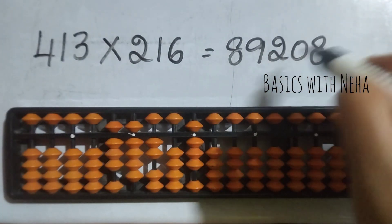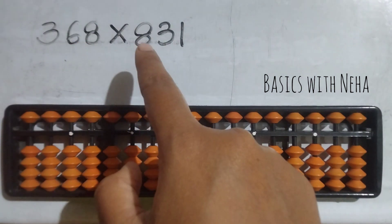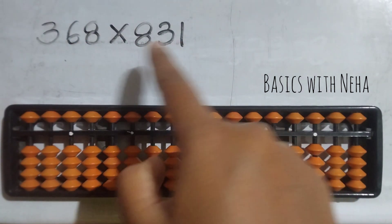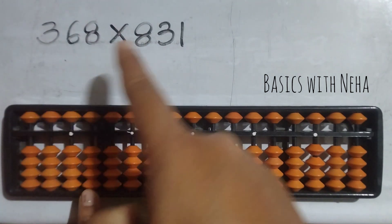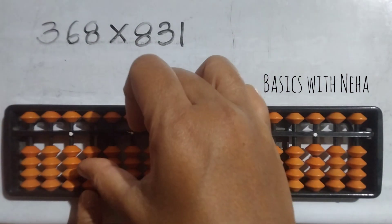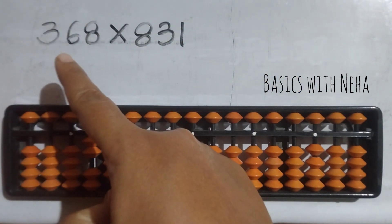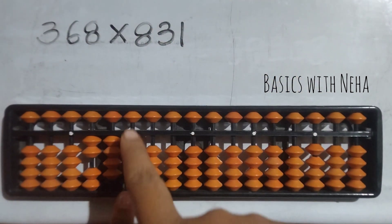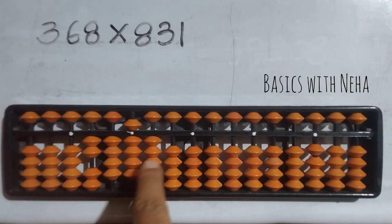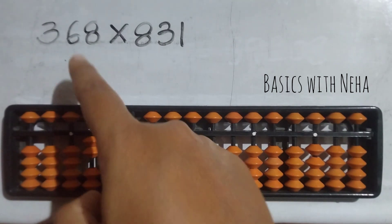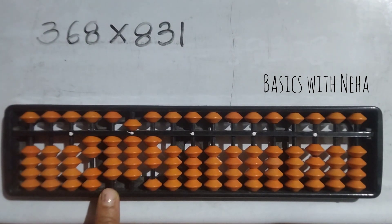The second question: 368 into 831. Six numbers — sixth rod. 3 eights are 24 — two four. 3 threes are 9 — zero nine. 3 ones are 3 — zero three. Now it is 6 into 831 — start from the fifth rod. 6 eights are 48.